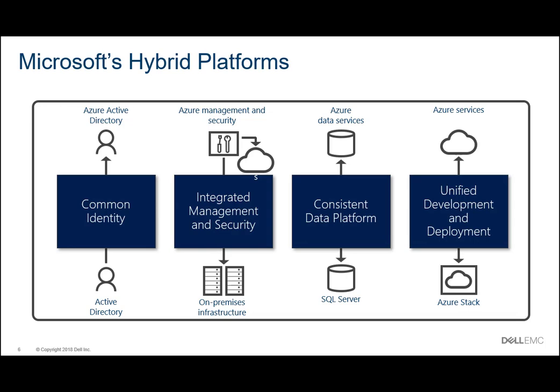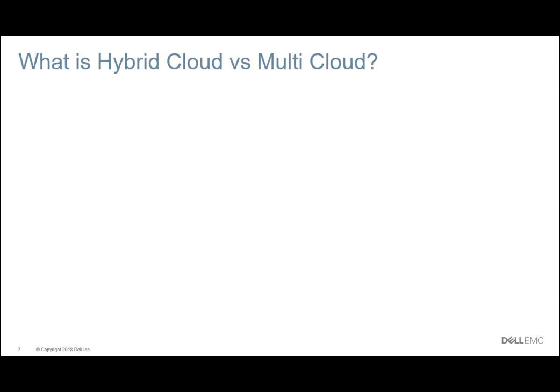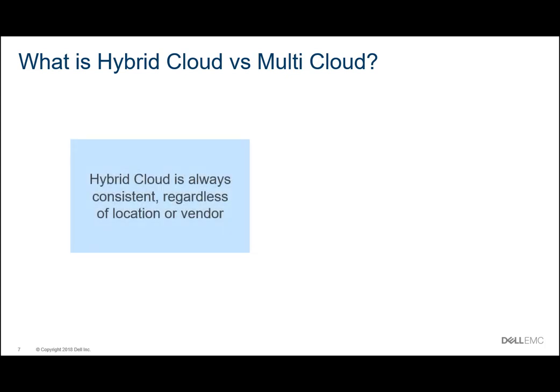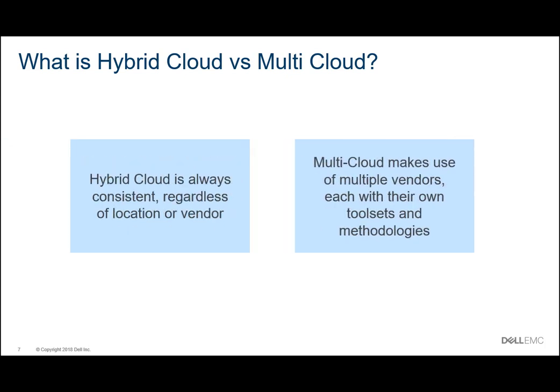So what is Microsoft's cloud message when it comes to hybrid? Largely it's centered around four core pillars: identity, security, data platform, and the application lifecycle. But for the majority of organizations the reality is far more of a multi-cloud approach than this hybrid panacea. There's no one answer to what is hybrid versus what is multi-cloud. For me, hybrid is consistent in terms of the tooling approach, skill set, core security concepts, identity management — it's consistency built in by design. Multi-cloud, on the other hand, makes use of products from multiple vendors without a cohesive and consistent approach to management, security, and identity.